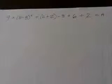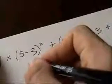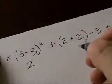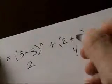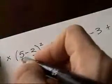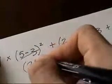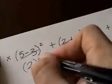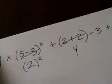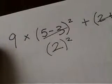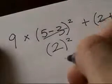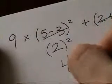First, take a look at anything in parentheses. Five minus three is two. Two plus two is four. Next, get rid of that exponent. Two squared is four.